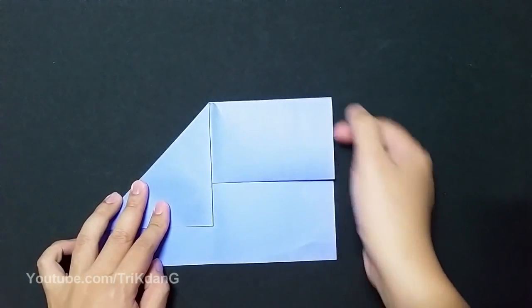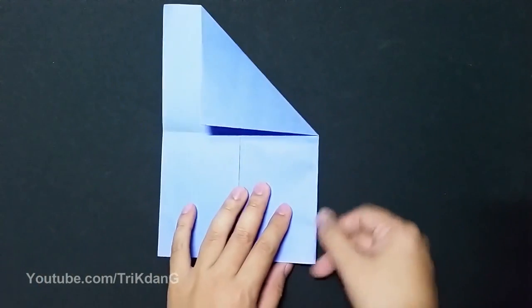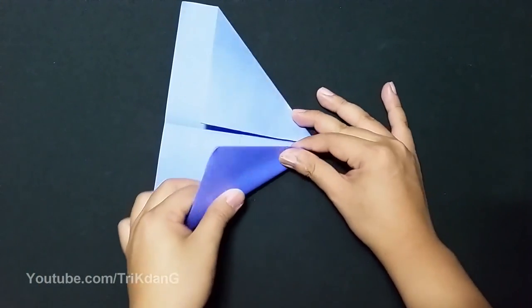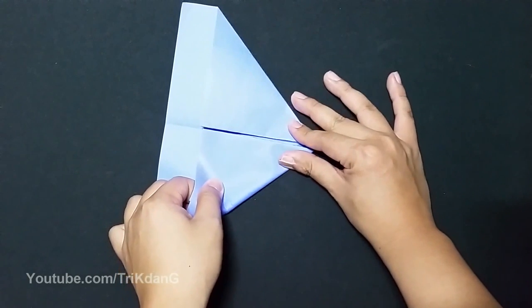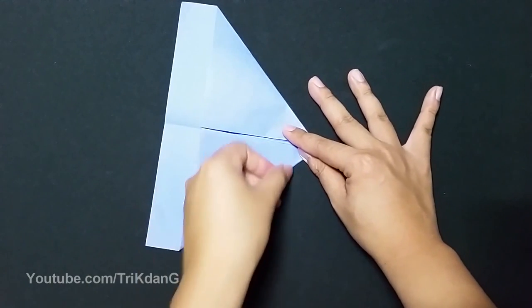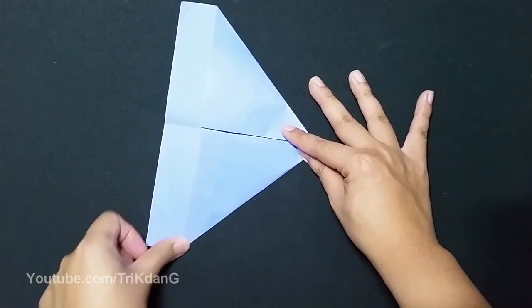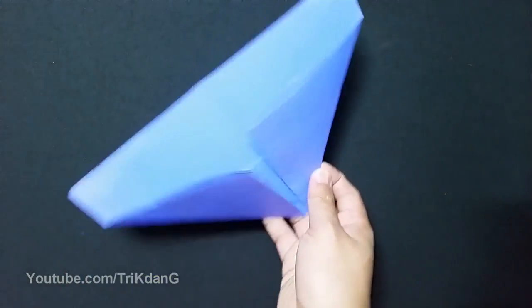I repeat the same step for this side, but I will turn the paper this way. Now this is what you have so far.